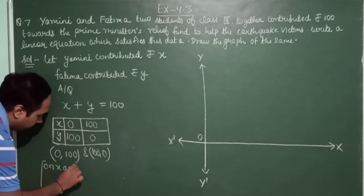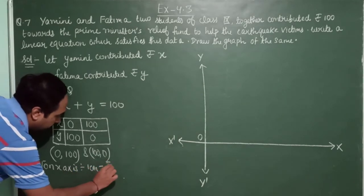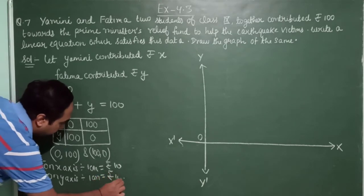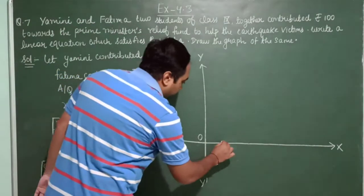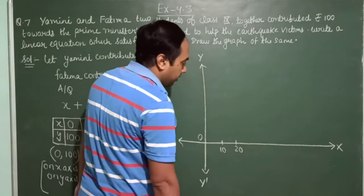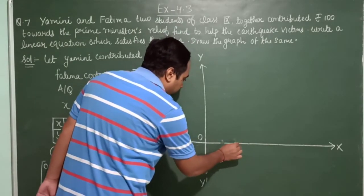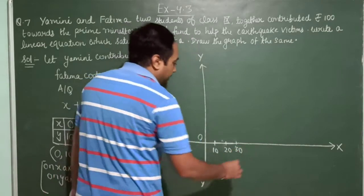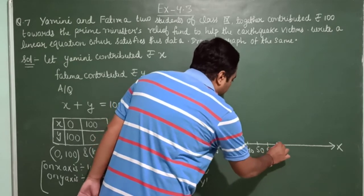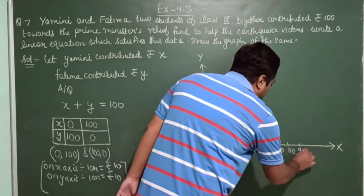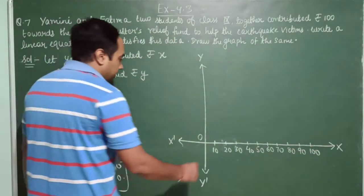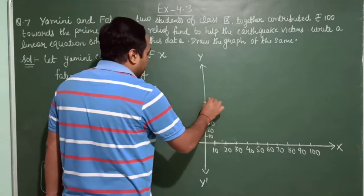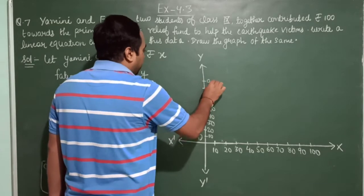On X axis we are considering 1 cm equal to 10 rupees, as well as on Y axis, 1 cm equal to 10 rupees. Labeling: 10, 20, 30, 40, 50, 60, 70, 80, 90, and 100. In the same manner on the Y axis: 10, 20, 30, 40, 50, 60, 70, 80, 90, and 100.